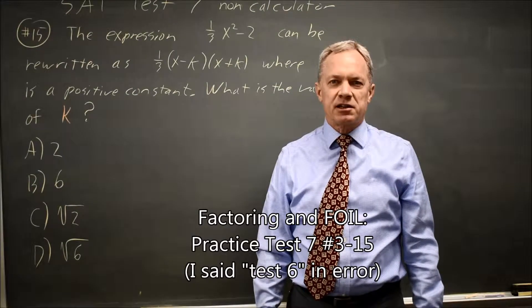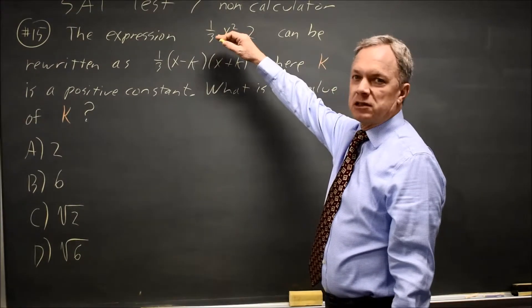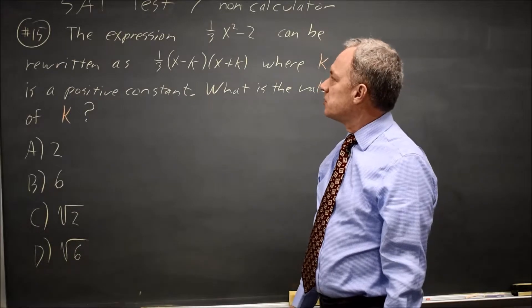This is SAT Test 6, non-calculator question number 15. College Board gives you a special quadratic, which can be viewed as a difference of two squares, and they're going to make you do that.